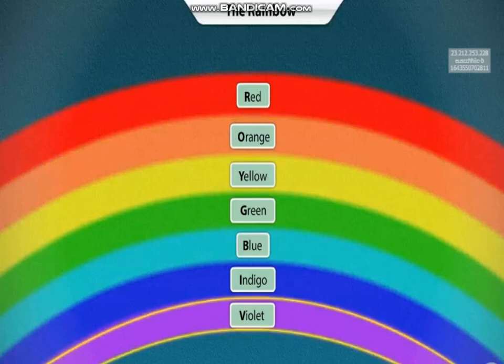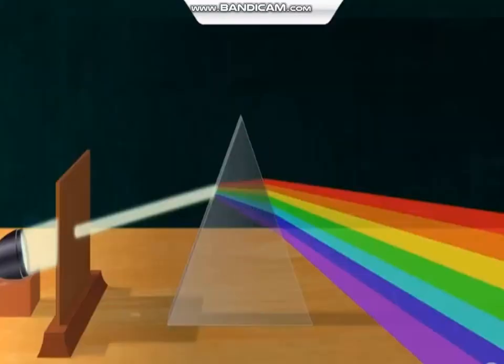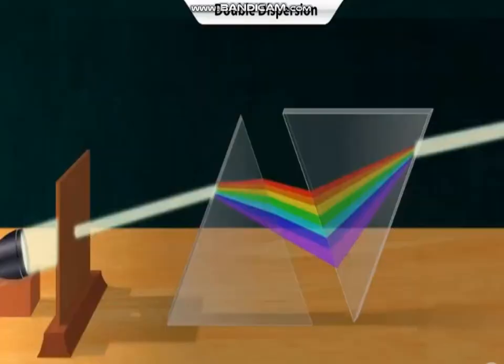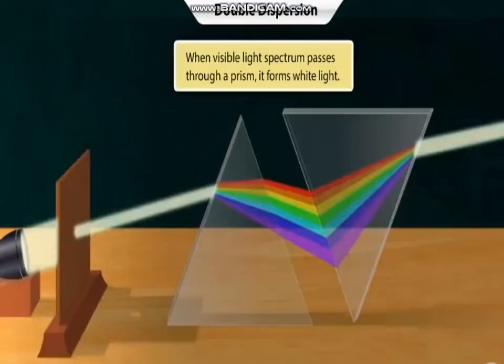Now let us go back to our prism and torch setup. What will happen if we place another prism in front of the emerging spectrum? Did you see that? You got back the original beam of white light.